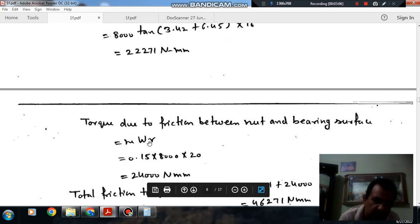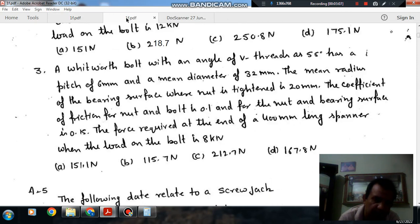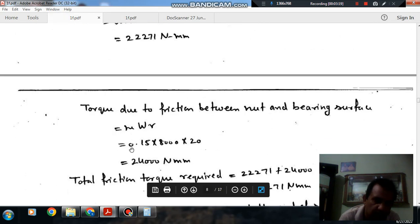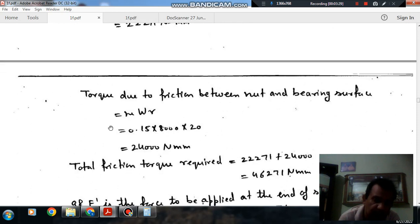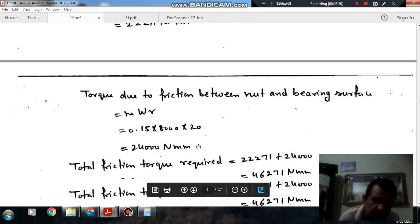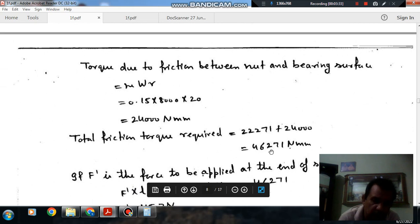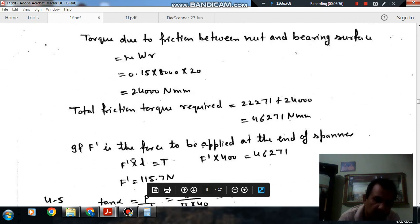If you consider the friction between the bearing and nut, that friction is given by mu w r. Here mu is coefficient of friction between bearing and nut, that is 0.15. So 0.15 into 8000 into 20 gives 24,000 newton-millimeters. Total friction torque required is summation of these two, so that will be 46,271 newton-millimeters.